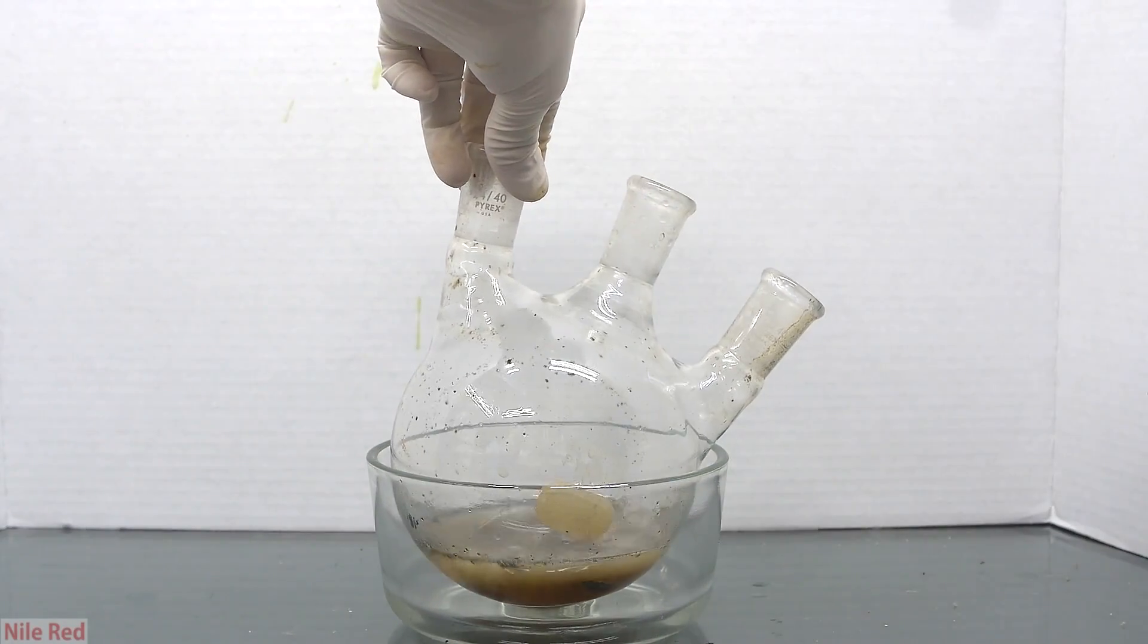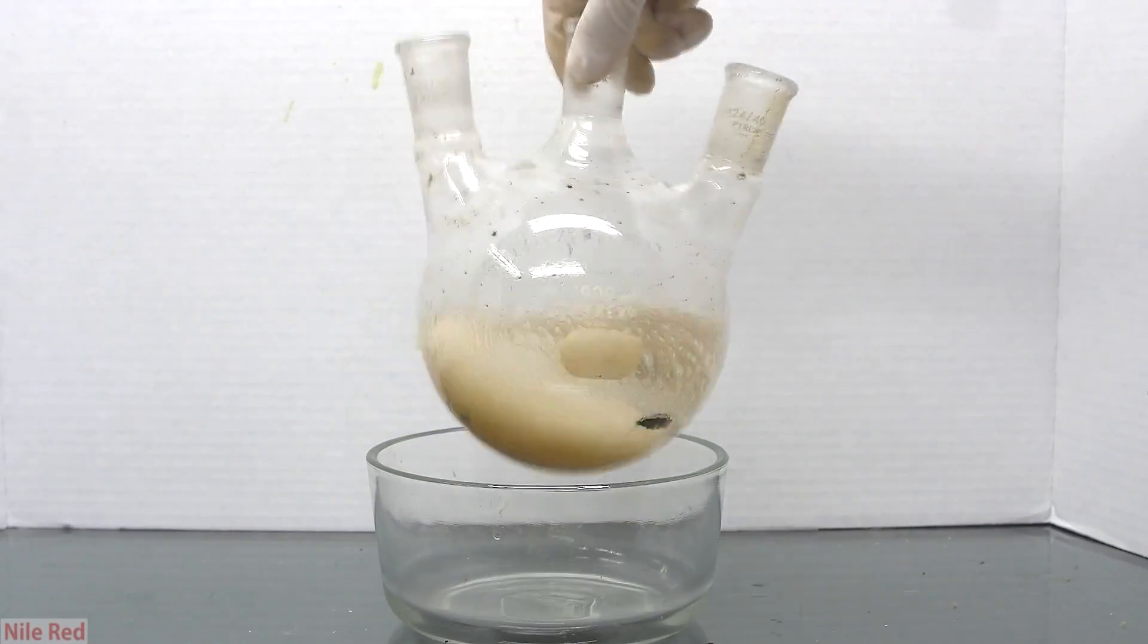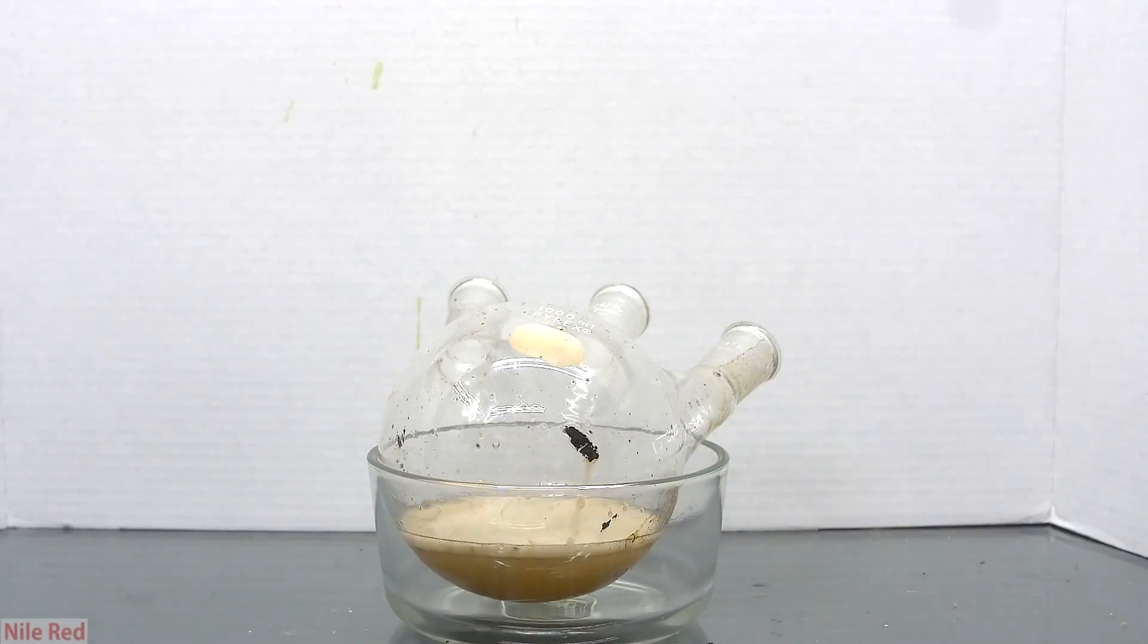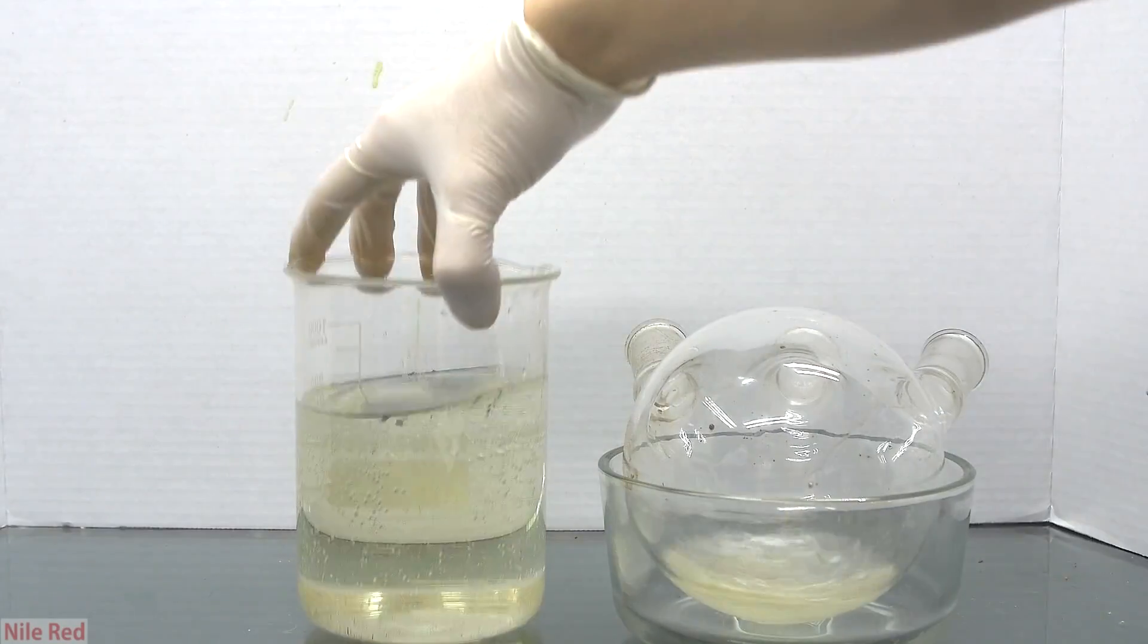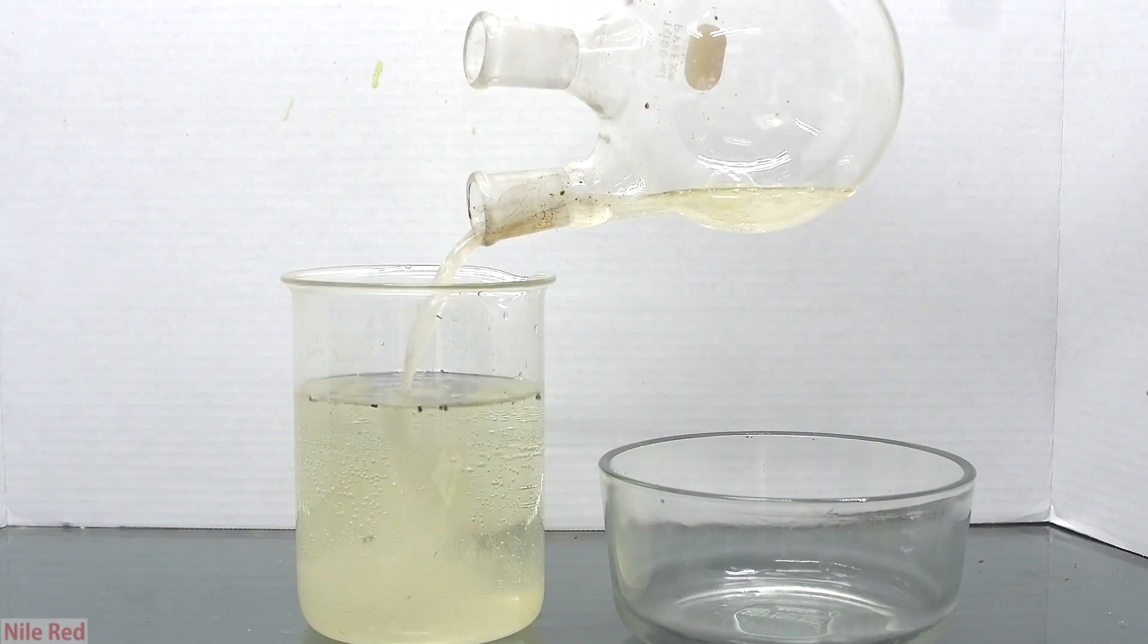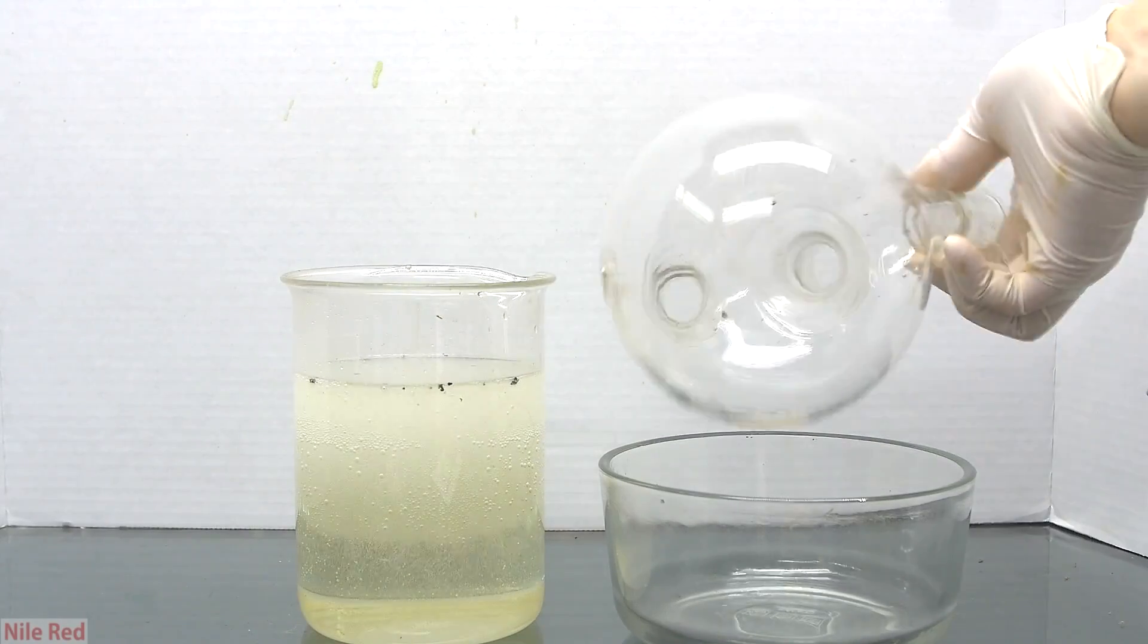Eventually though, it seemed like the piranha was losing its potency, so I made a new fresh batch just to get rid of the last stubborn stuff. In the end, when I was finally done cleaning it with the piranha, I was left with a relatively clean flask.